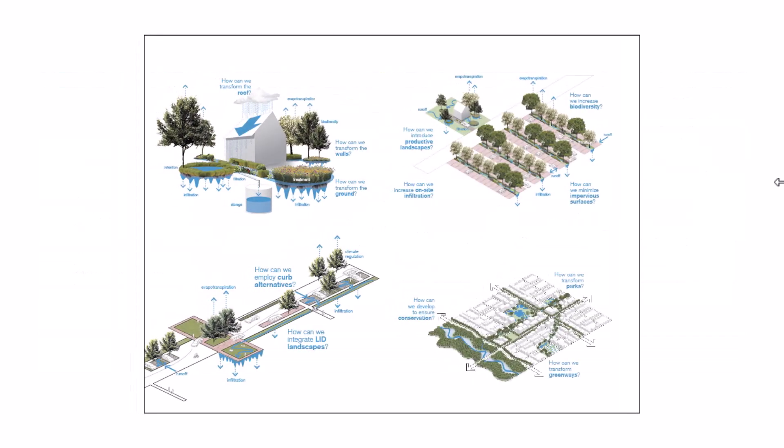Green roofs are also a big part of this. You can see how green roofs can be utilized to flow off into specific facilities for filtration, storage, and infiltration. On the right we have different landscape setups that can help with transpiration and allowing water to be caught in natural trees. There are also LID landscapes on the left for different alternatives, and greenways are another one.